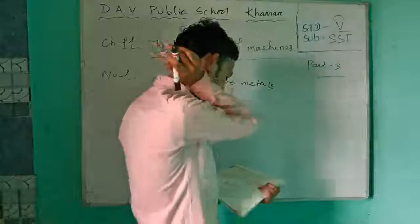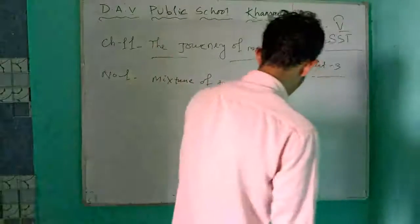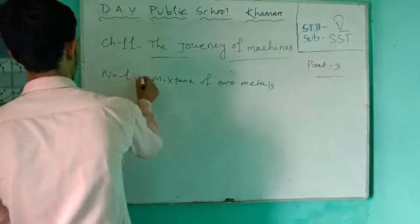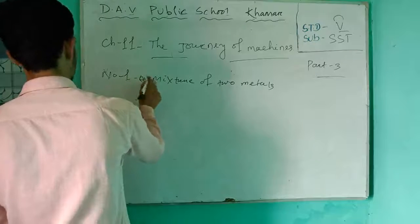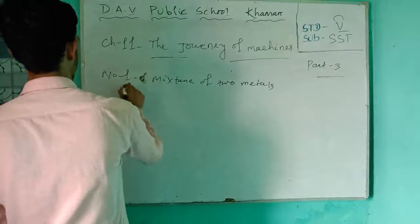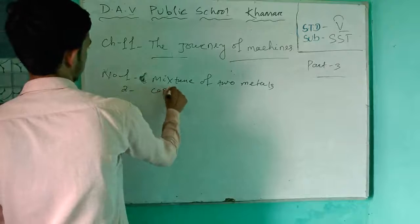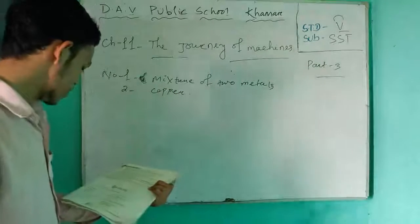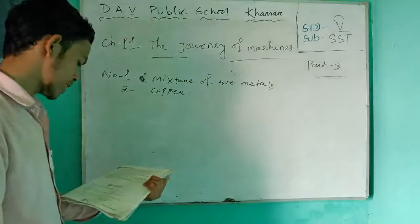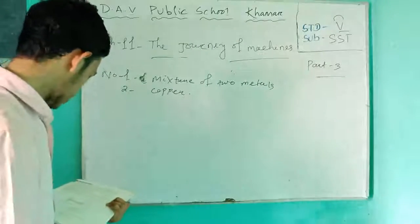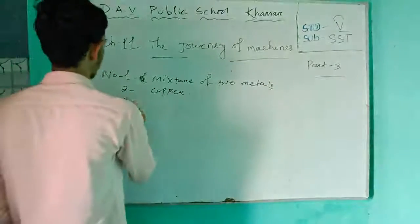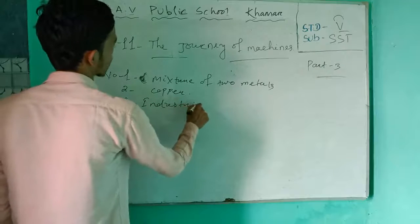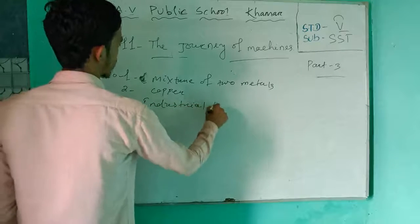Which metal was first discovered by early man? Copper. Number one. Number two — copper. Number three — the change of conduct. The steam engine is known as the industrial revolution. James Watt is associated with the industrial revolution.